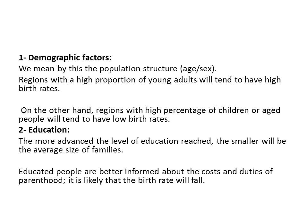Countries with a high proportion of young adults — the second group, aged 20 to 60 years — will tend to have a high birth rate. Countries with a high percentage of children or aged, old and retired people over 60 years will tend to have a low birth rate. The second factor is education. The more advanced the level of education reached, the smaller will be the average size of families, because educated people are better informed about the costs and duties of parenthood, so it is likely that the birth rate will fall.